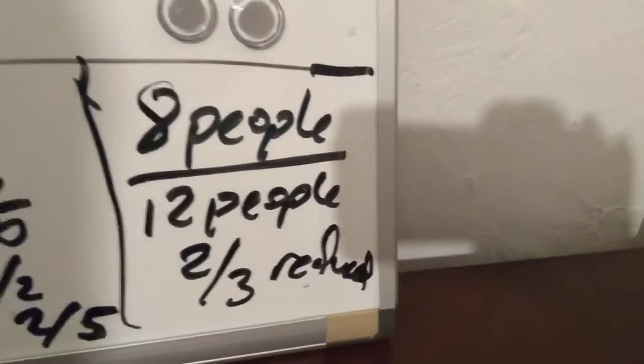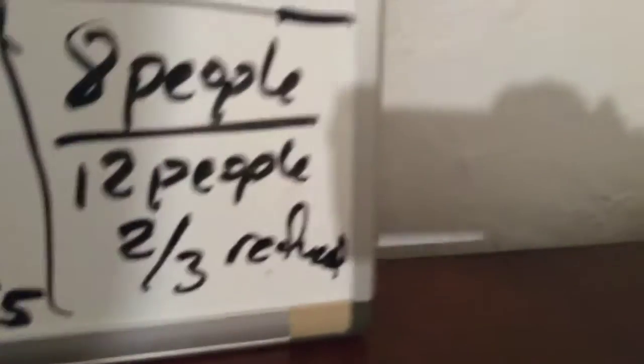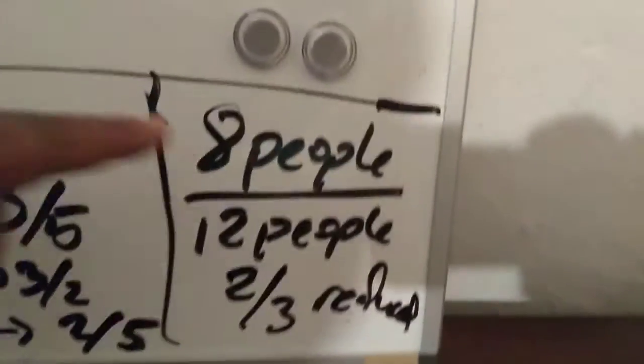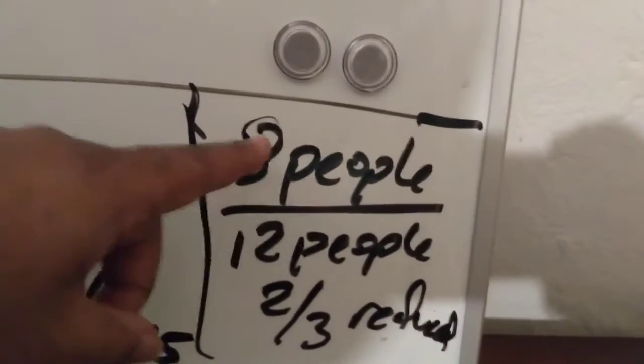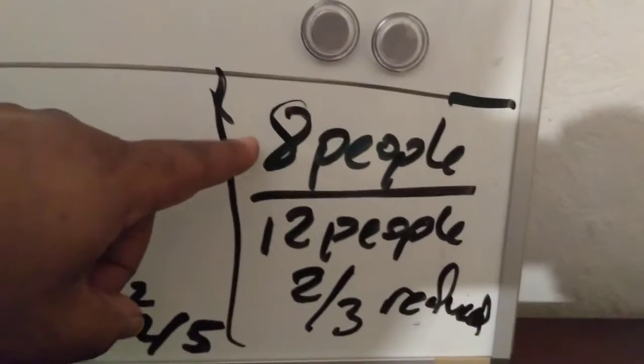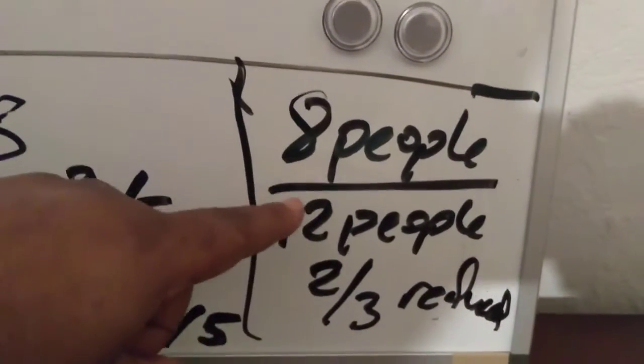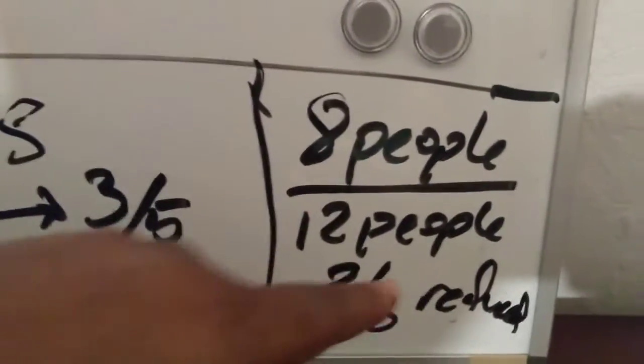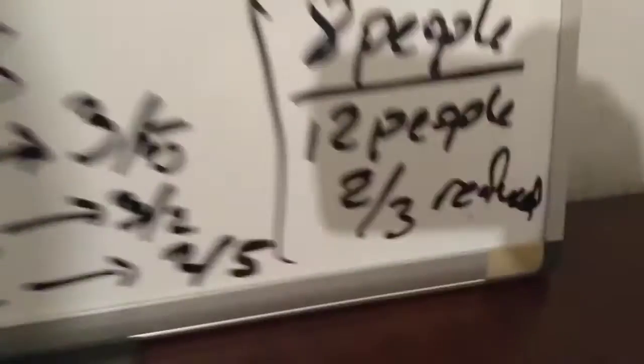So, this is another ratio where we're talking about people, eight people to 12 people. Well, the people cancel, so you're left with eight over 12. Eight over 12, four goes into eight twice, and four goes into 12 three times. So, it reduces down, two-thirds is the reduction. The answer with this ratio would be two-thirds.